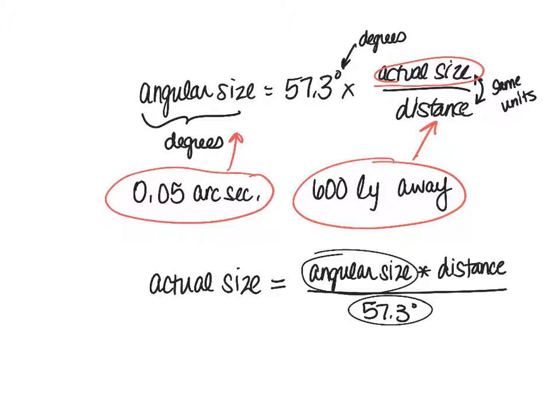So there's a couple different things that we need to do here in terms of units. The angular size is given to us in arc seconds, and that's really not that useful because of the fact that this quantity right here is in degrees. So we need the arc seconds to be converted into degrees.